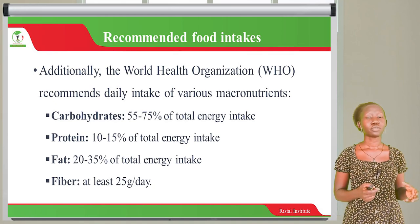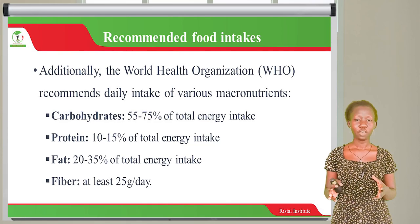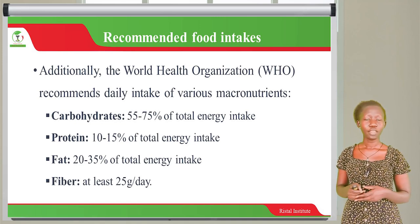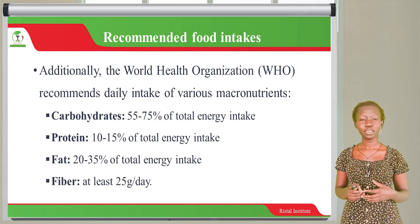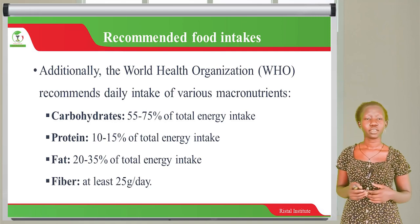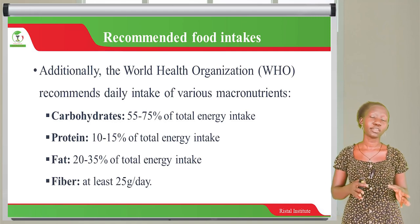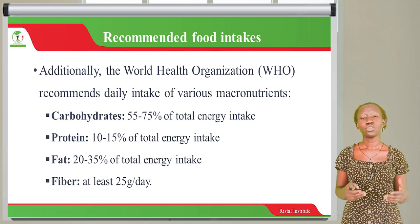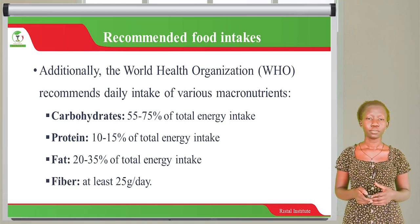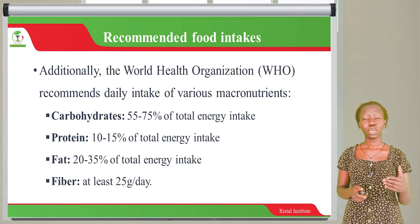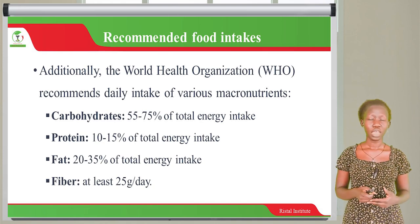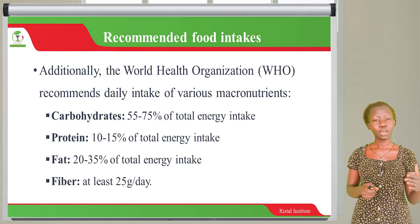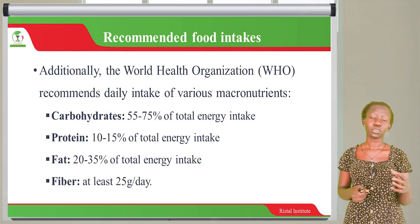For example, carbohydrates: 55 to 75% of total energy intake should come from carbohydrates. Protein should contribute at least 10 to 15% of total energy intake. Fats should contribute at least 20 to 35% of total energy intake. And fiber should provide at least 25 grams a day. Carbohydrates should contribute the most energy, while fats should contribute the least.